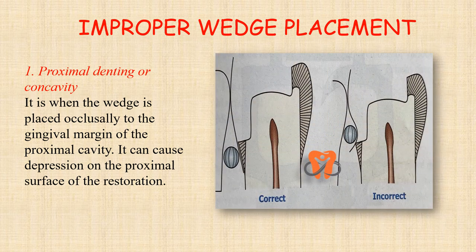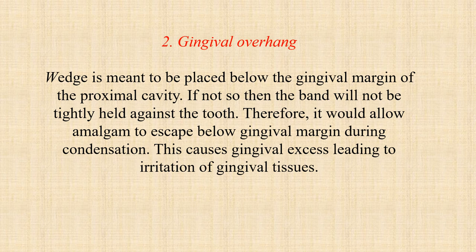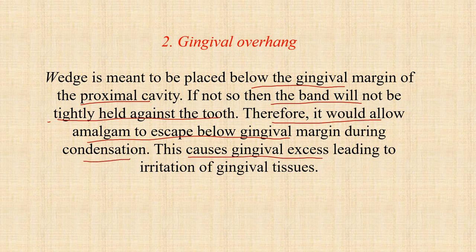If there is improper wedge placement, it can result firstly in proximal denting or concavity. In the first figure you can observe that the gingival margin and the wedge is placed below the margin — that is the correct position. In the second figure, the wedge is placed above the margin, which can result in proximal denting or concavity in the restoration. It also results in gingival overhang. If the wedge is not placed below the gingival margin of the proximal cavity, the band will not be held tightly against the tooth. Therefore, it would allow amalgam to escape below the gingival margin during condensation, causing gingival excess leading to irritation of the gingival tissues — this condition is known as gingival overhang.